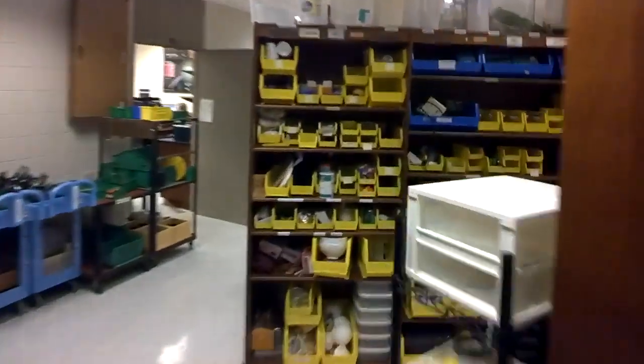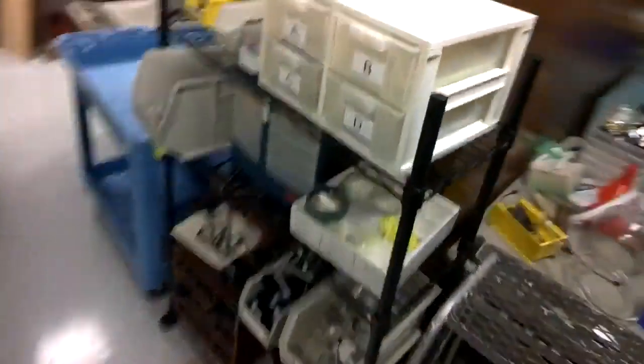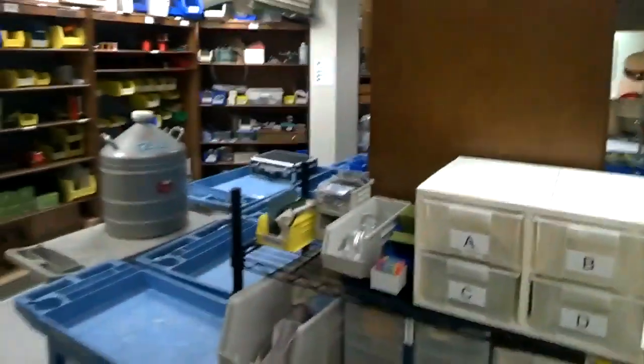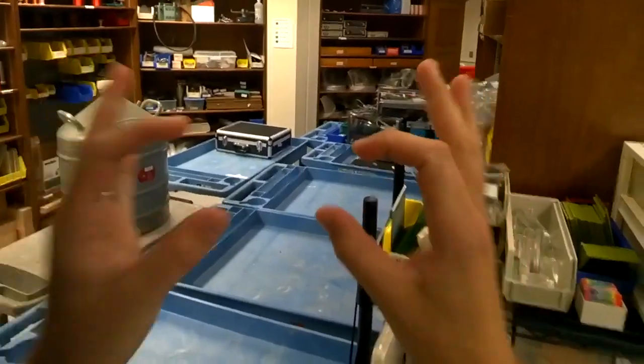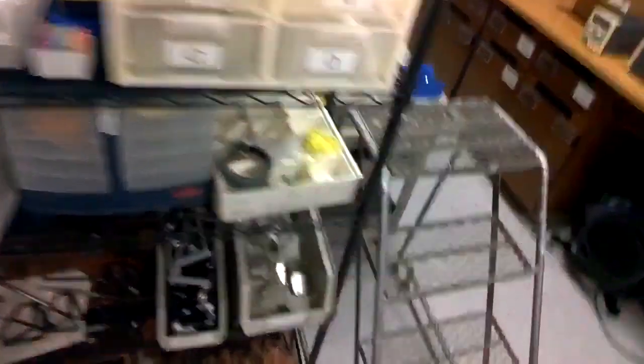Before we go up to the observatory though we need to make a quick stop in the physics lab. Here I've got a whole bunch of lenses, and the important thing to know about a telescope is that at its core all it really is is two lenses. Let's take a peek.